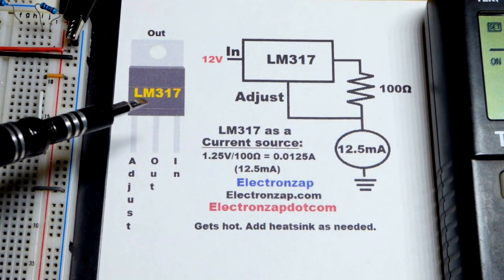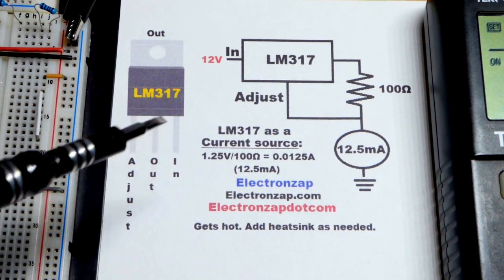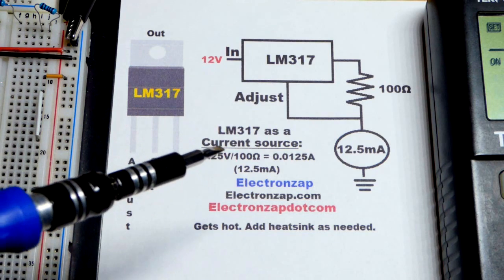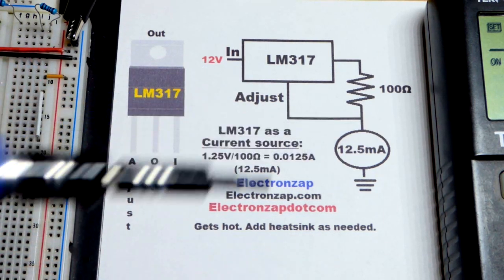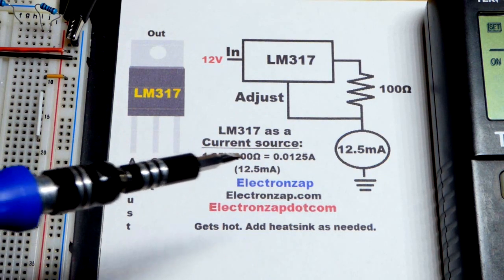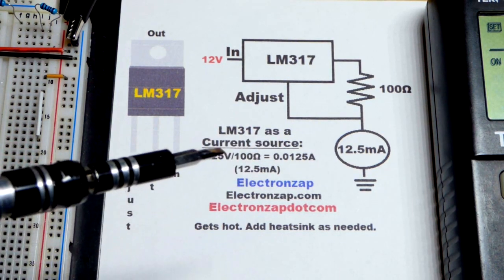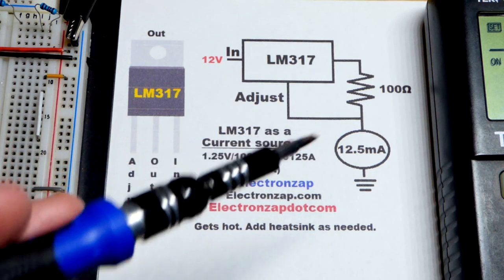So now in this video, we're going to look at the LM317 used as a current source. So normally you can adjust the voltage out. Now we're going to set a current. So it's not the typical use for it, but it is a use for it.